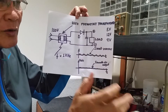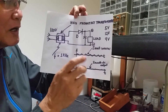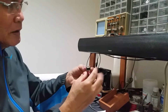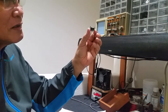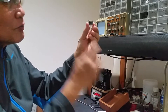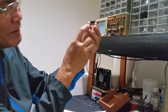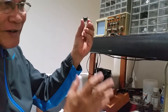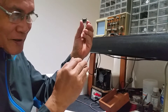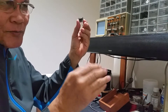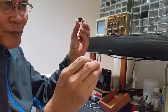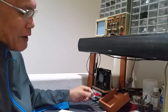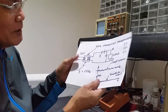So engineers now design high-frequency transformers. The one inside the charger is actually something like this — but the one inside is maybe four times smaller than this physical example. It's small, but it gives us the correct output for the digital load to have nearly 100% efficiency. Why do we need a small high-frequency transformer?